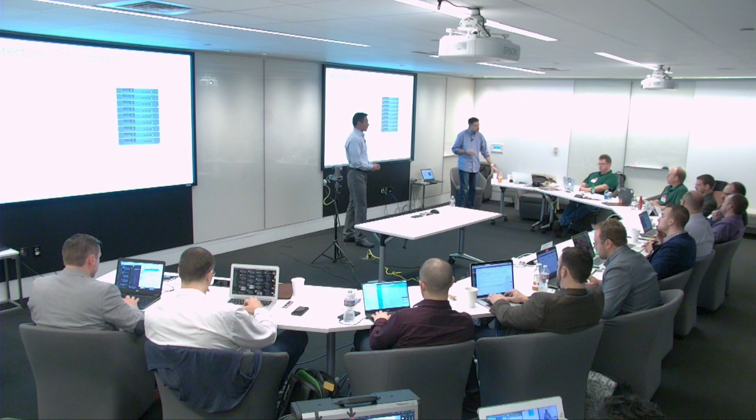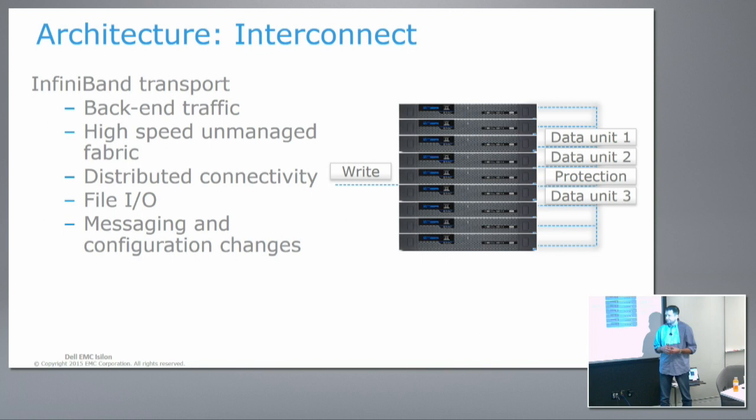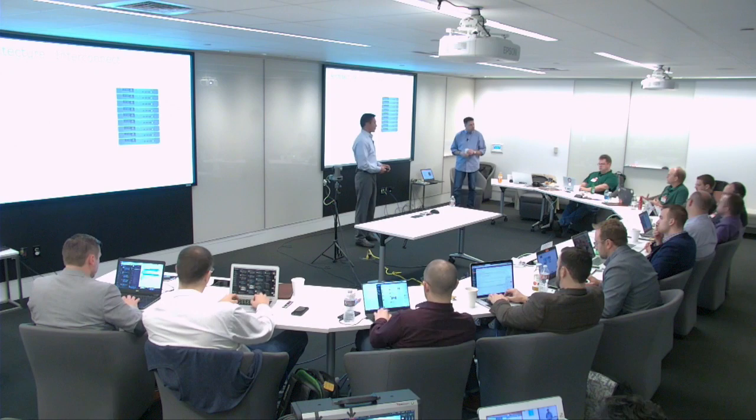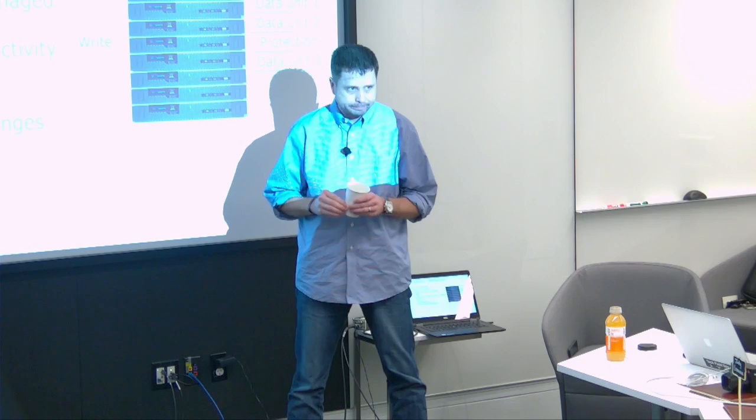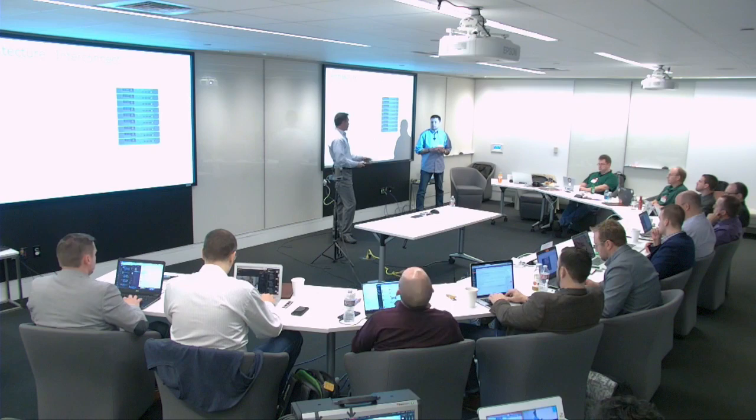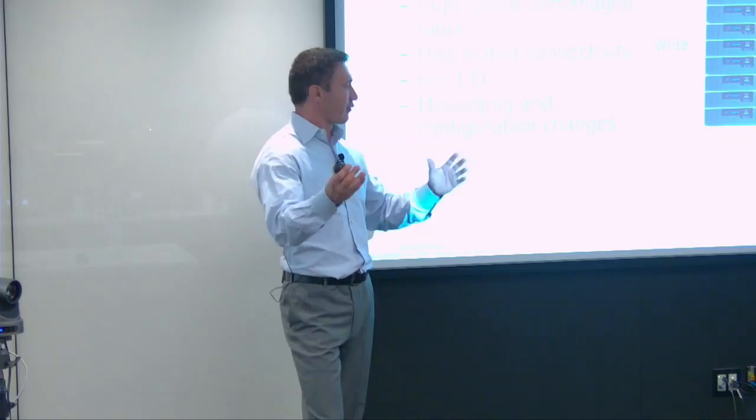Q: For a 144-node cluster, what does the InfiniBand mesh look like — how many switches? A: It's one chassis switch, a 144-node chassis switch, likely a modular one grown to 144. It's actually 144 by two for redundancy purposes. That's our back end.